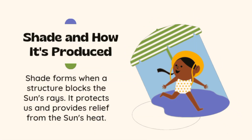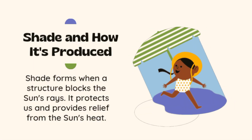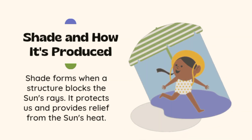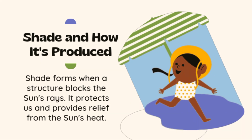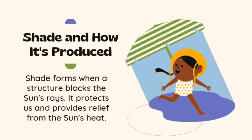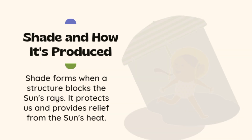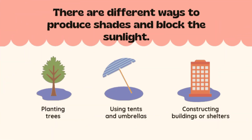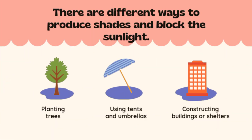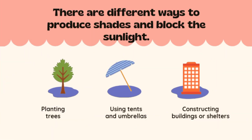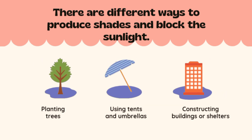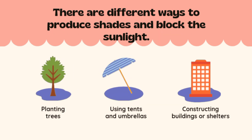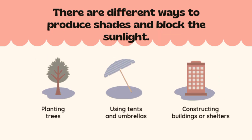Shade and how it's produced. Shade forms when a structure blocks the sun's rays. It protects us and provides relief from the sun's heat. There are different ways to produce shade and block sunlight: planting trees, using tents and umbrellas, and constructing buildings or shelters.